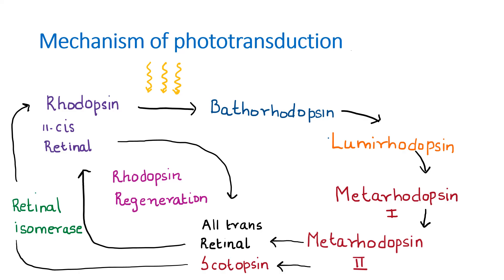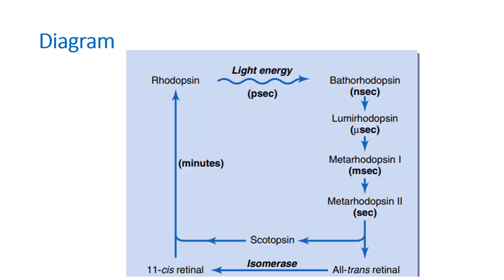So to summarize: rhodopsin is converted to metarhodopsin 2; 11-cis retinal is converted to all-trans retinal; retinal isomerase converts it back to 11-cis retinal; and 11-cis retinal recombines with scotopsin to reform rhodopsin. This cycle was described by Wald and is also called Wald's visual cycle. When phototransduction is asked in an exam, you also have to draw a diagram of Wald's visual cycle.